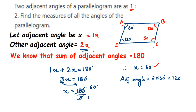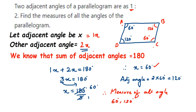Therefore, the measure of all angles is 60°, 120°, 60°, 120°. We used the property that adjacent angles sum to 180° to find X, and then the property that opposite angles are equal to find all four angles. I hope that's clear — if you have any questions, drop a comment. Thank you so much for watching.